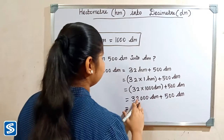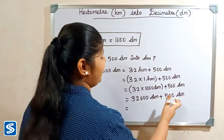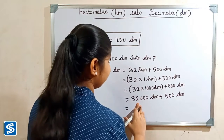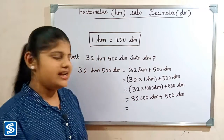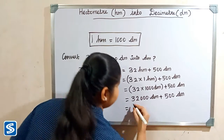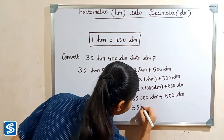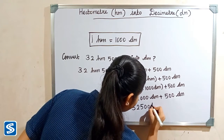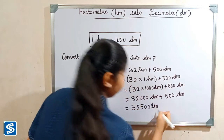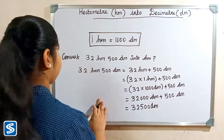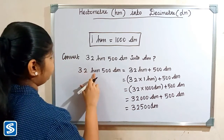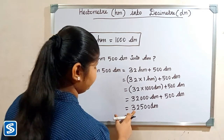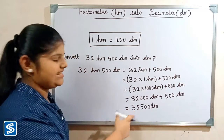Now we have to add 32,000 decimeter and 500 decimeter. When we add 32,000 decimeter and 500 decimeter, our answer will be 32,500 decimeter. So 32 hectometer 500 decimeter is equal to 32,500 decimeter.